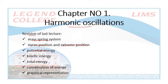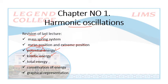In the last lecture we dealt with two types of energy: potential energy and kinetic energy. Potential energy is the energy we have by virtue of position, and kinetic energy is the energy we have by virtue of motion. In the example of the mass-spring system, we found both energies. The potential energy was named elastic potential energy because it is the energy stored in the spring. We found the total energy and proved that total energy is conserved.